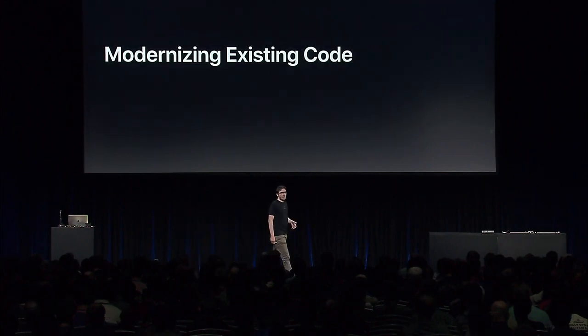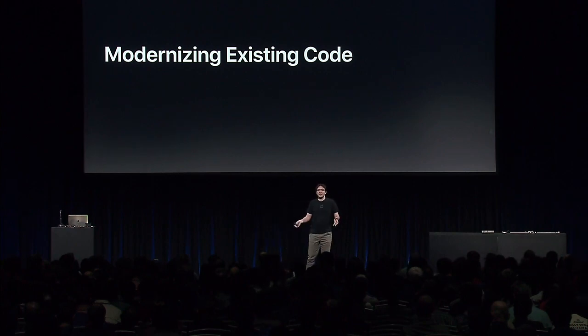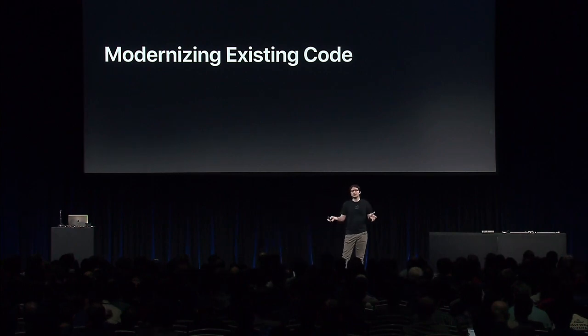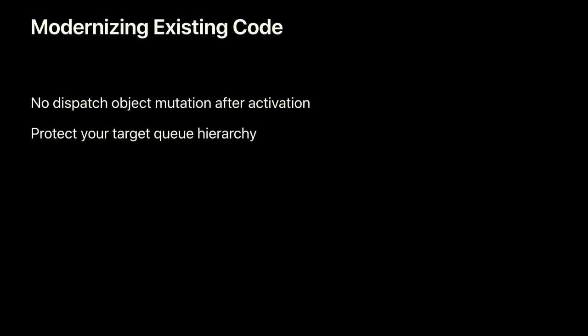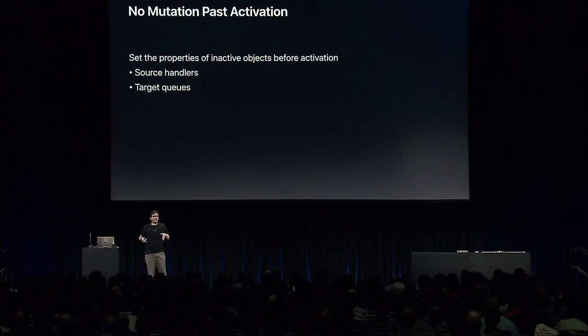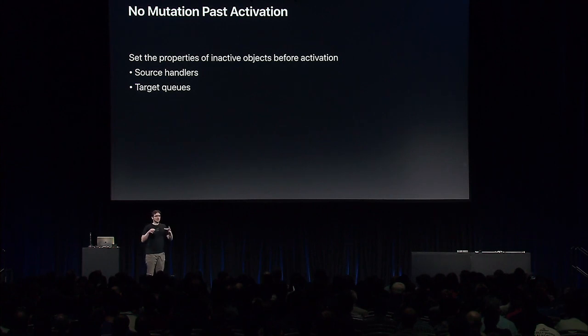To take full advantage of this technology, there are two steps to follow. The first is no mutation after activation. The second is paying extra attention to your target queue hierarchies. No mutation past activation means: when you have any property on a dispatch object, you can set them, but as soon as you activate the object, you should stop mutating them.